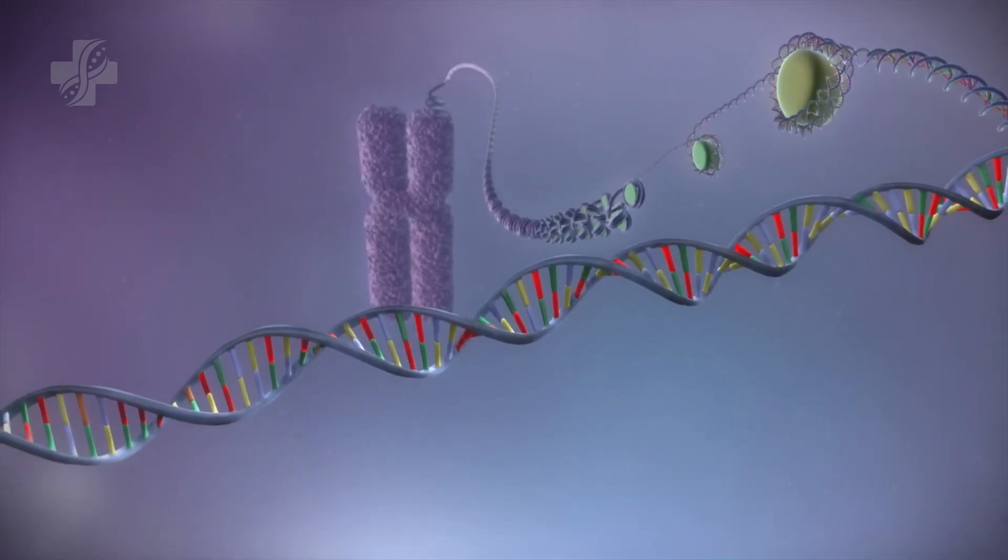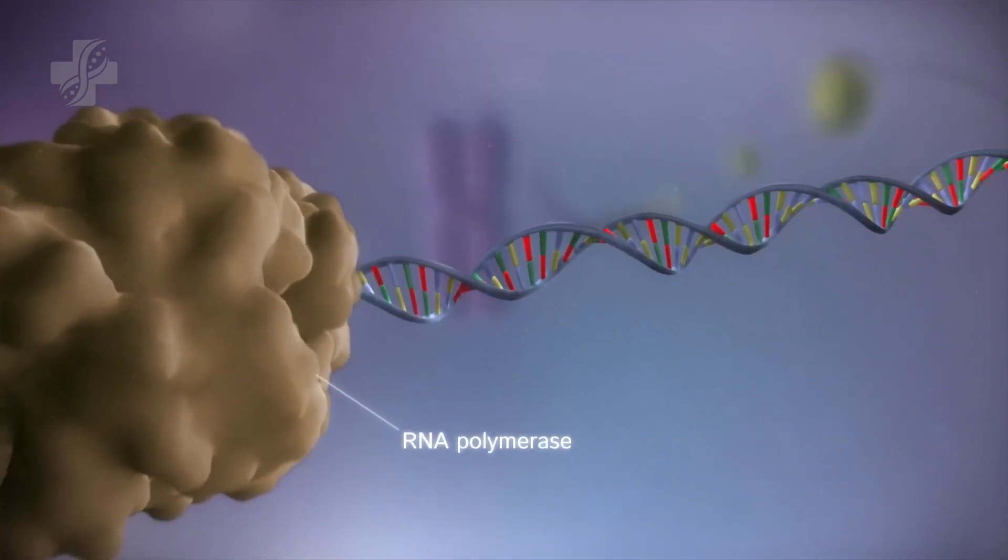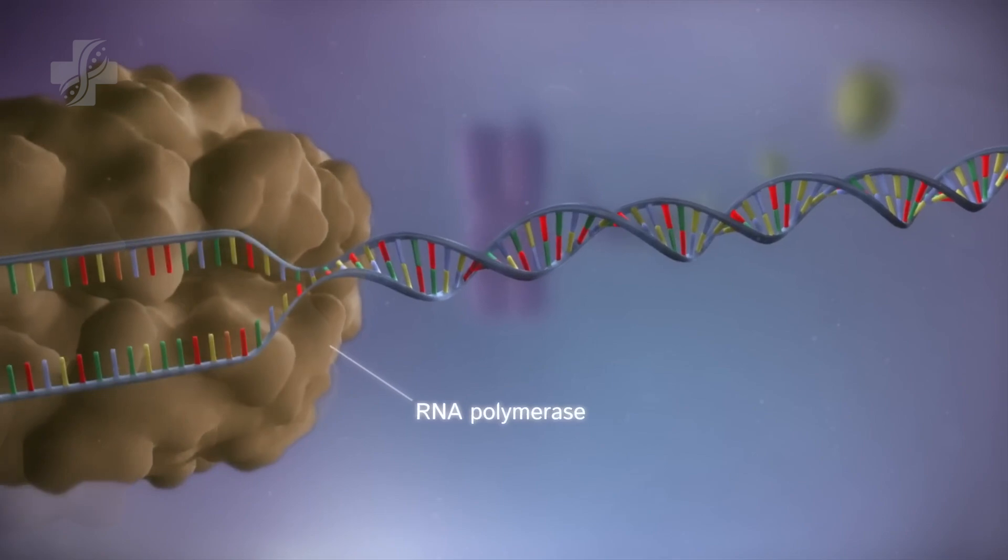When a gene is switched on, an enzyme called RNA polymerase attaches to the starting code of the gene.